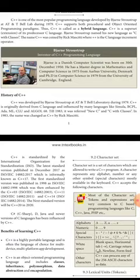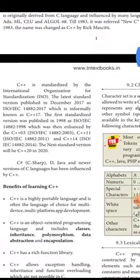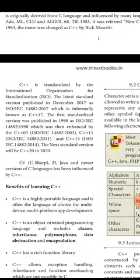In 1983 it was referred to as 'new C' and 'C with classes.' First they named it 'new C' because it was derived from C, right. Then the name was changed to C++ by Rick Mascitti — he changed the name from 'new C' to C++. Now C++ is standardized by the International Organization for Standardization, ISO.